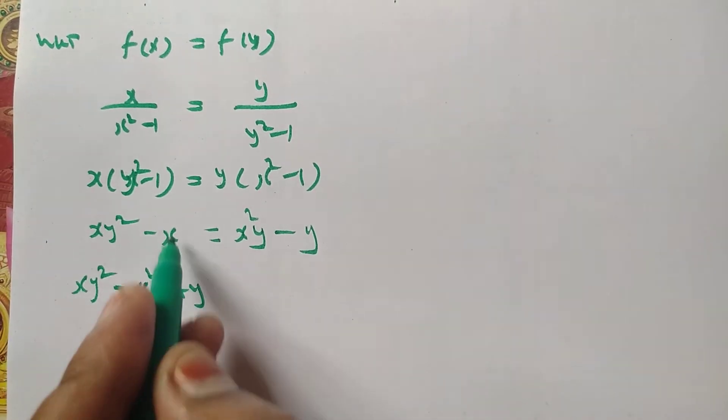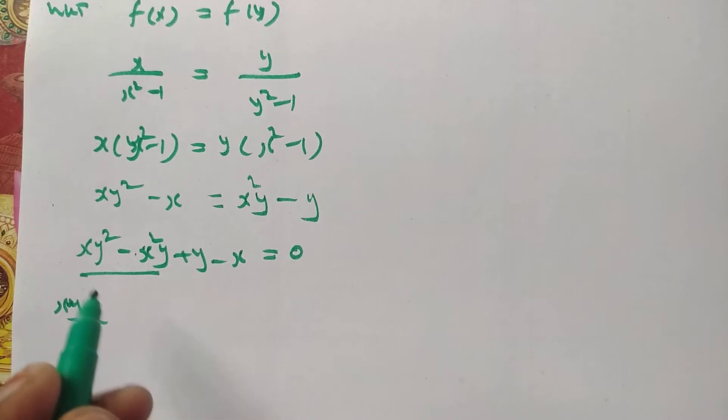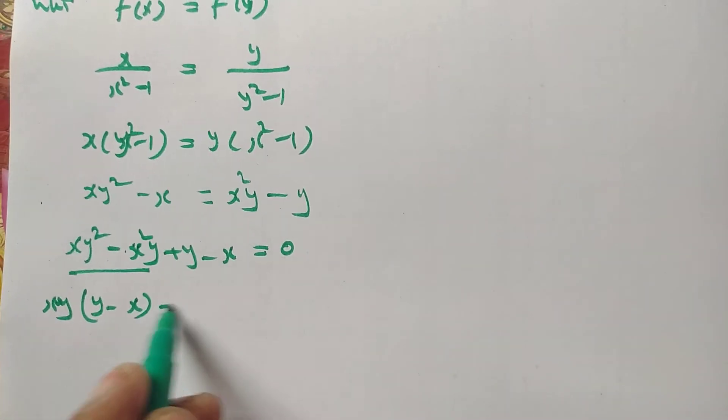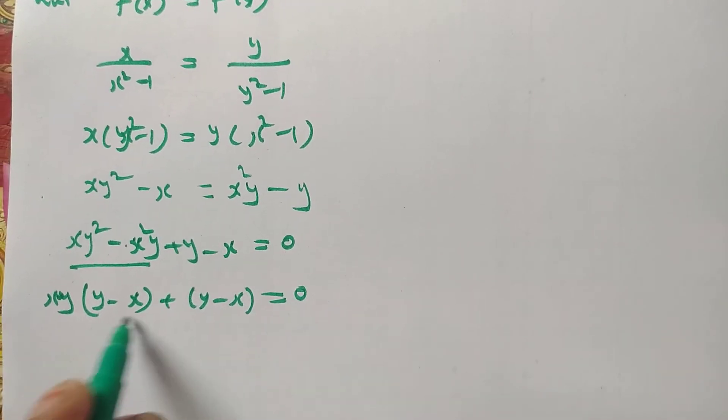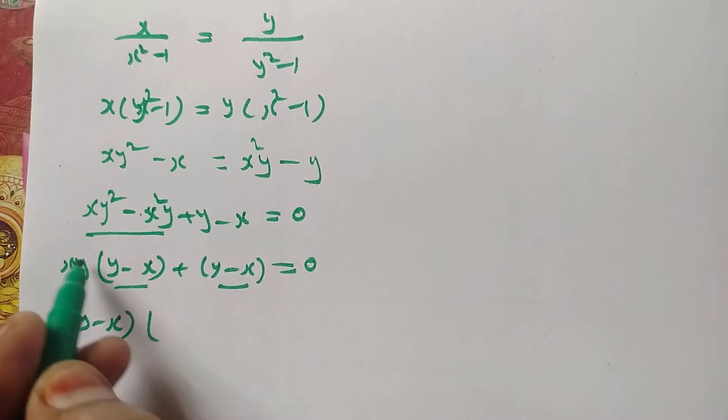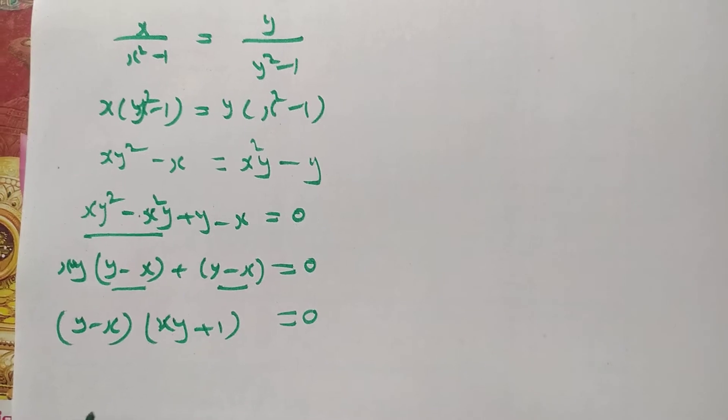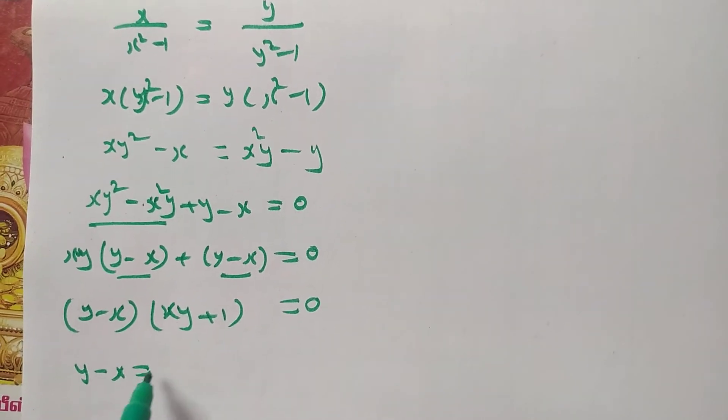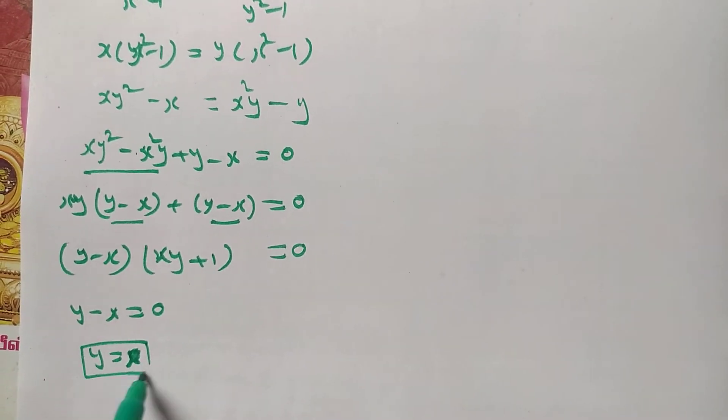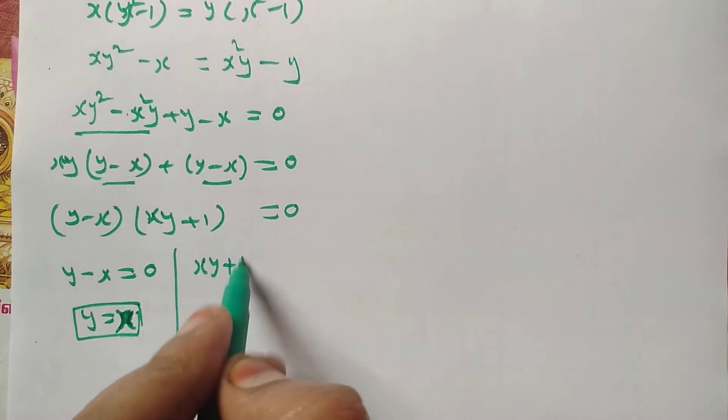Rearranging: xy² - x - yx² + y = 0, which gives xy² - yx² + y - x = 0. Factoring: xy(y - x) + (y - x) = 0, so (y - x)(xy + 1) = 0.